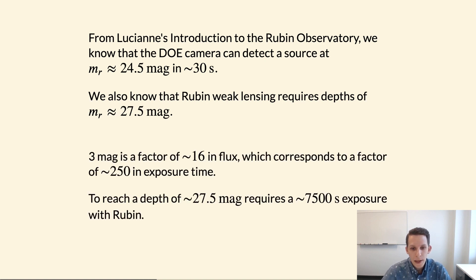So three magnitudes corresponds to roughly a factor of 16 in flux, which in turn corresponds to about a factor of 250 in exposure time. So, if we want to get down to 27.5 magnitudes in order to do the weak lensing science that we hope to do with the Rubin Observatory, that means that in every single field that we want to observe, we're going to need something like 7,500 seconds or a little over two hours of total exposure time.